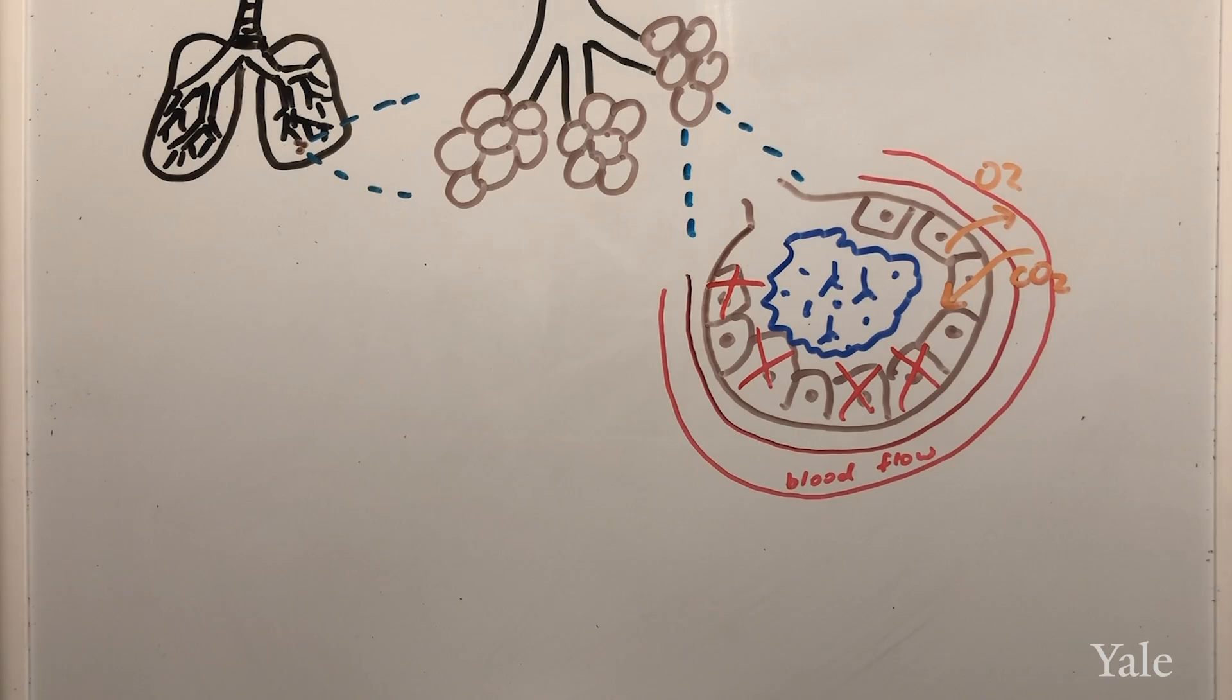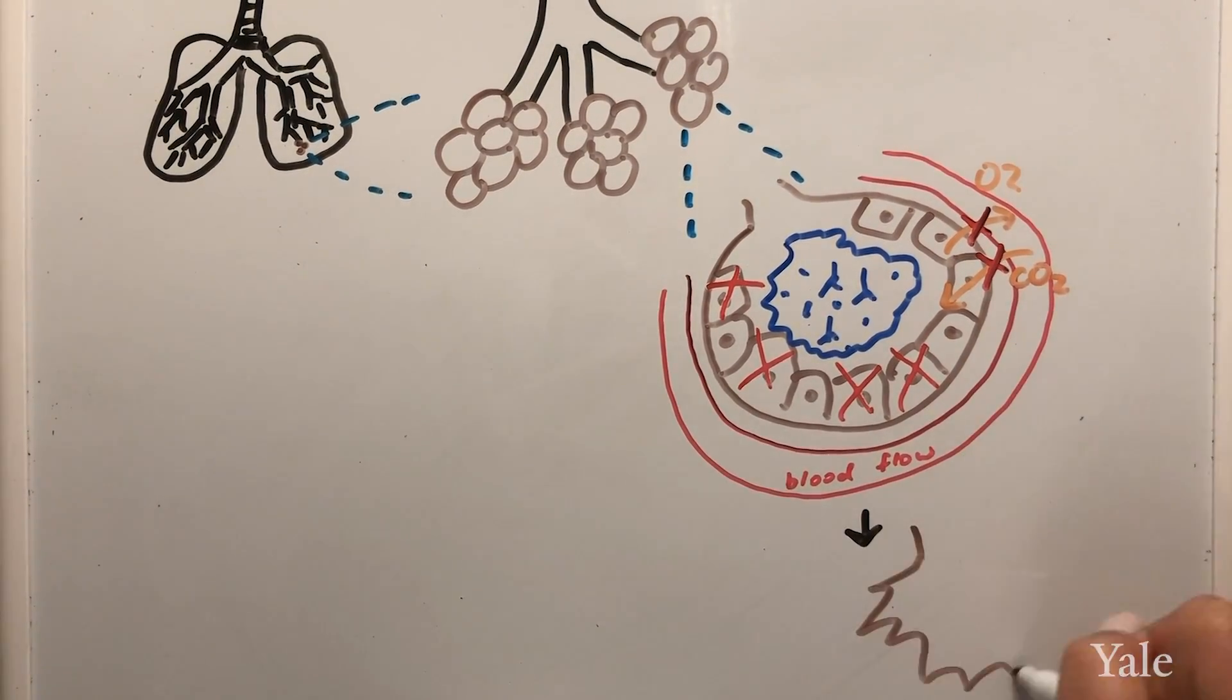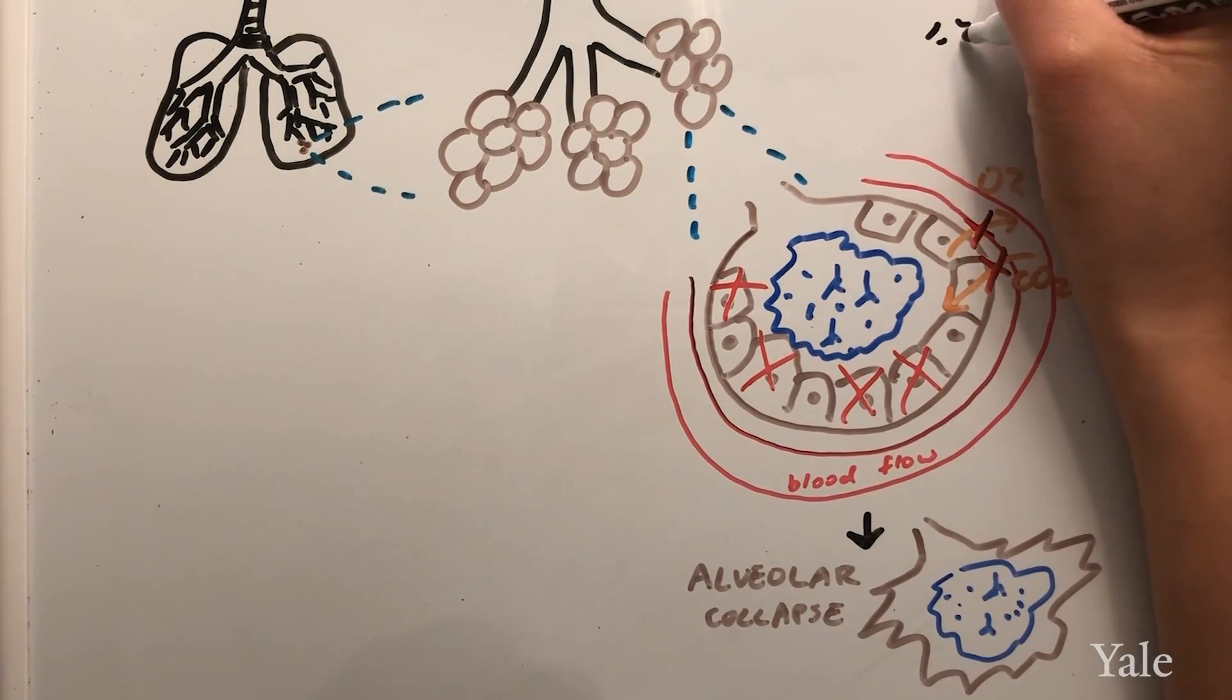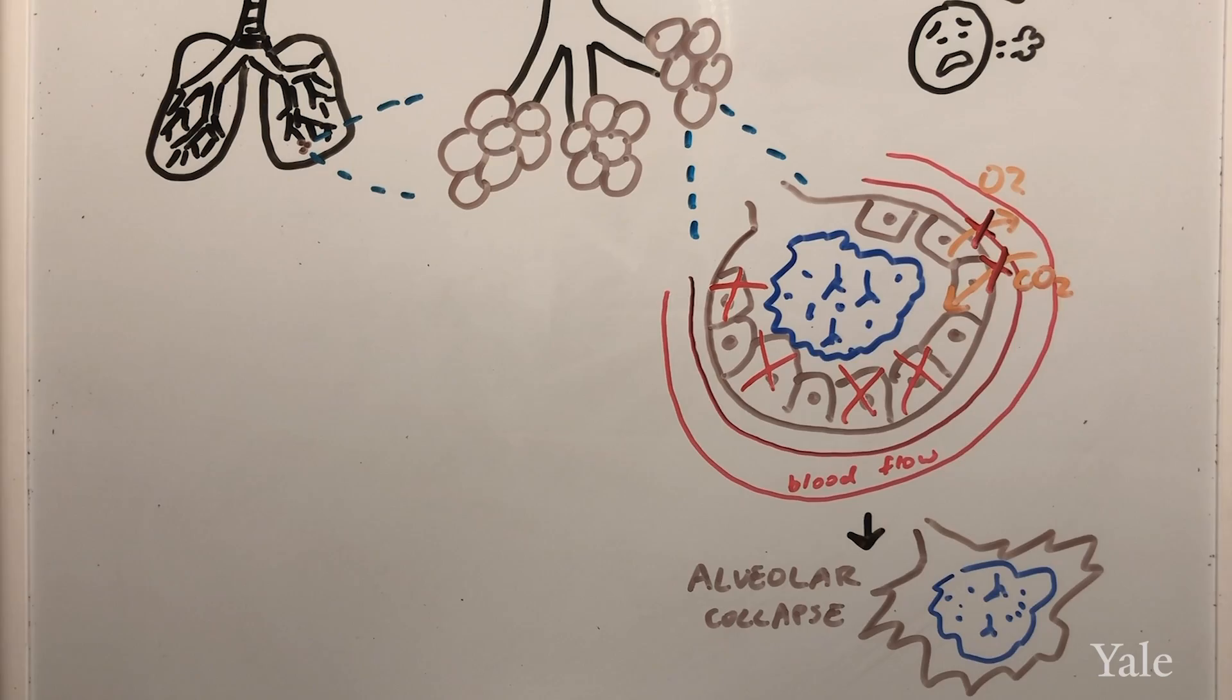This interrupts the proper transfer of oxygen into the bloodstream and causes alveoli to eventually collapse. This is why difficulty in breathing is one of the symptoms of COVID-19 infection.